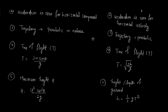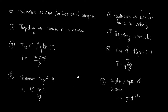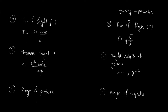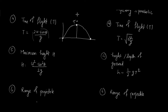Point four is time of flight — the total duration taken by the projectile to cover its path and return to ground level. Time of flight T is equal to 2u·sinθ / g. The time to achieve maximum height is always half of this, which is u·sinθ / g.